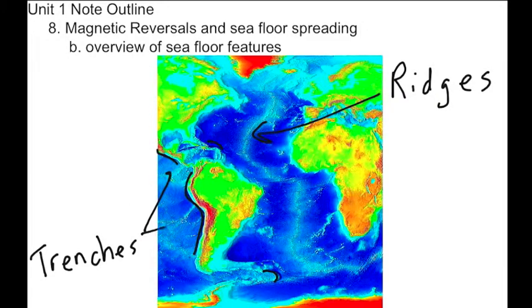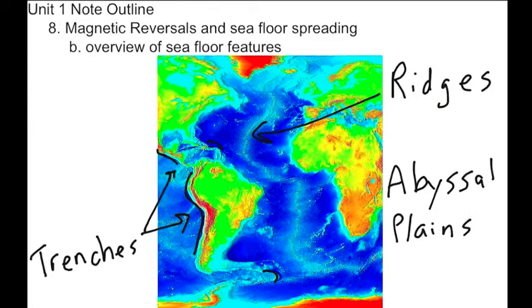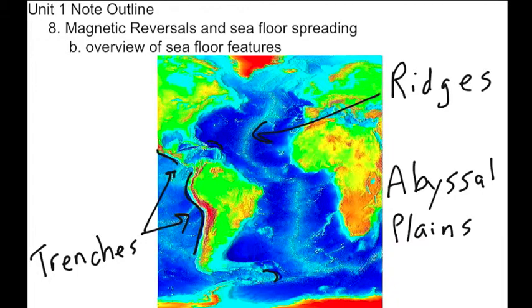The third ocean feature are the abyssal plains — these deep areas where the ocean is very deep, called the abyssal plains.